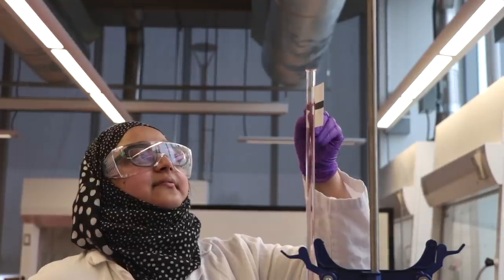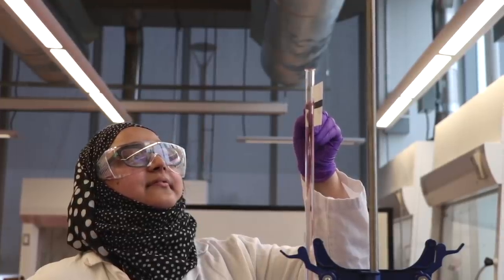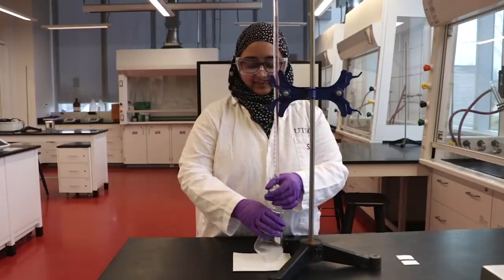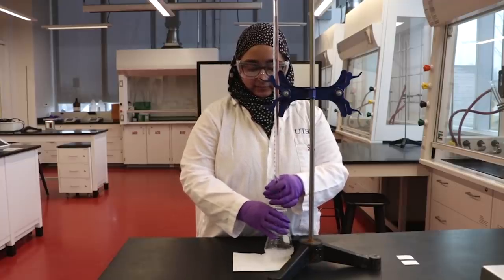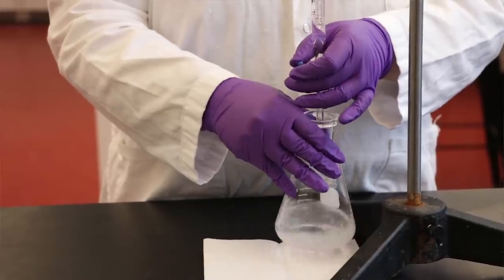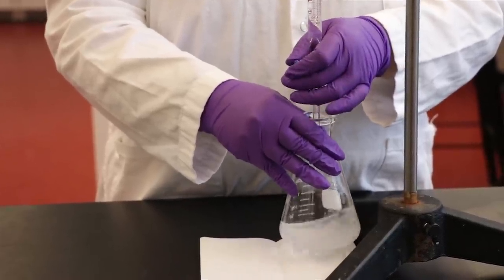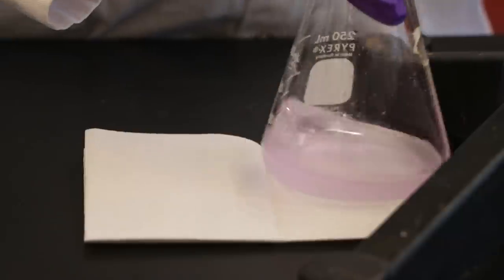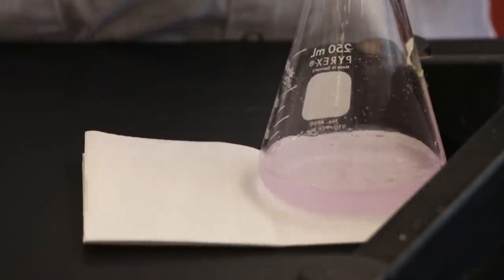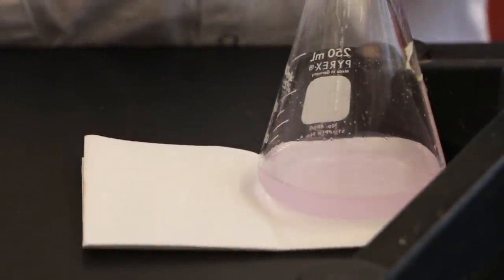Titrate using the standard NaOH that was added to the burette. Remember to record the initial and final burette readings to two decimal places. The endpoint of the titration is indicated by a pale pink color.